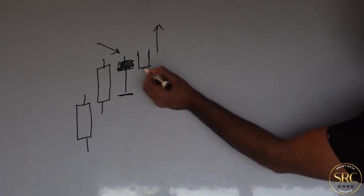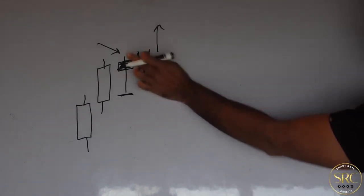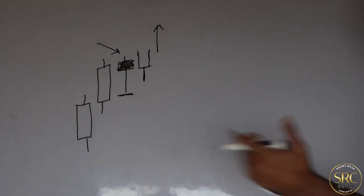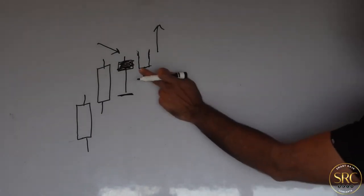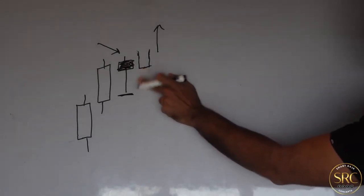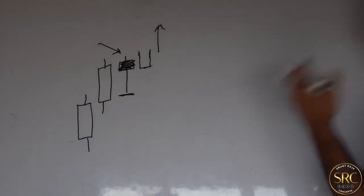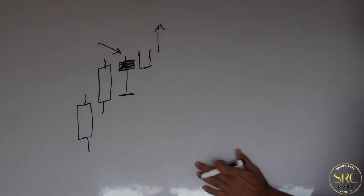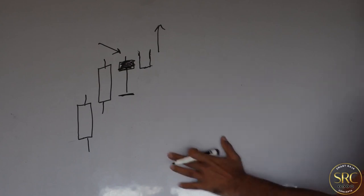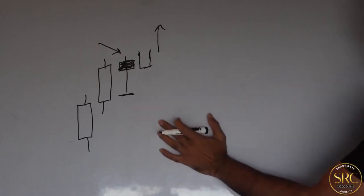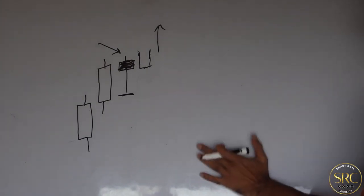Whenever you have a candle with a lower wick first, as it starts to break the high, I use my regular lot size. But if there's no lower wick, I use a smaller risk — a smaller lot size — because of the lower probability it's going to go up. So you're keeping in mind the probability: if there's a higher probability, use your regular risk; if there's a lower probability, use a lower risk.